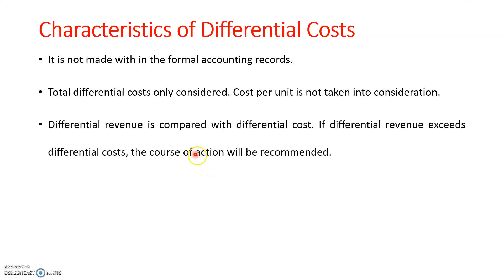Another feature is that the decision-making factor is based on comparing differential revenue with differential cost. If the differential revenue exceeds the differential cost, that course of action will be recommended. By making changes in the level of output, there may be an increase or decrease in revenue and cost. If the differential revenue is more than the differential cost, that alternative course of action will be recommended for execution.